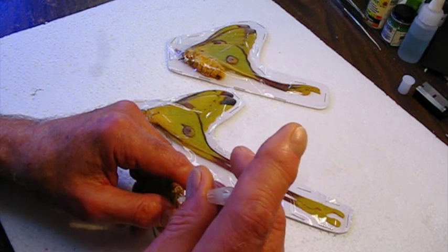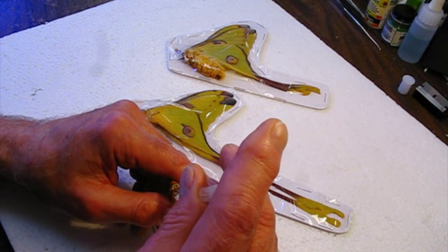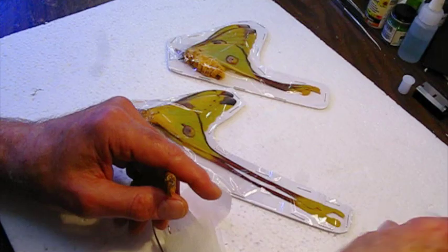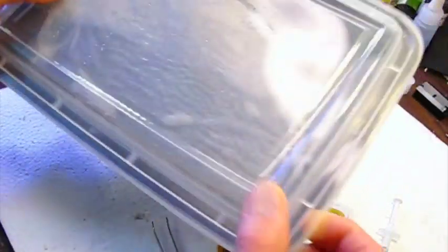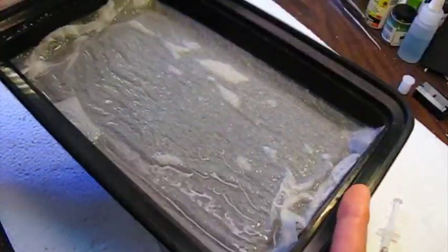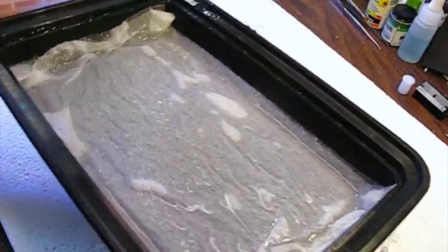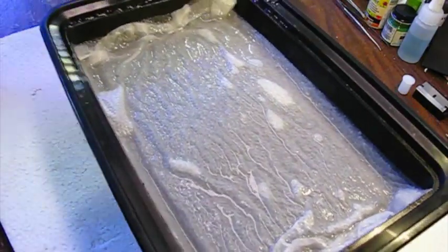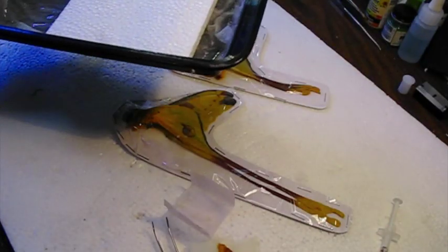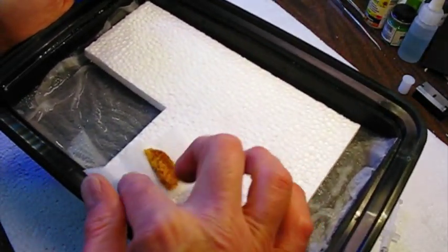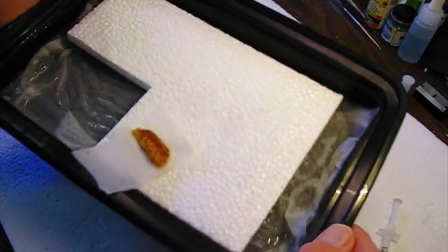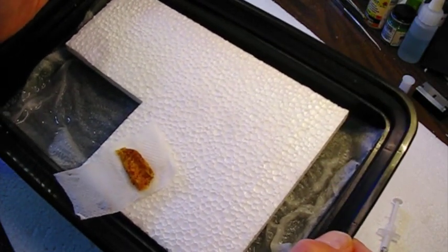And then I'm going to put it in a relaxing chamber. I've got a plastic box with some paper towel on the bottom, and it's soaked in water. And I can put this on that platform to keep it from actually coming in contact with the water. We'll try and soak that abdomen and see if I can get some better shape on it.